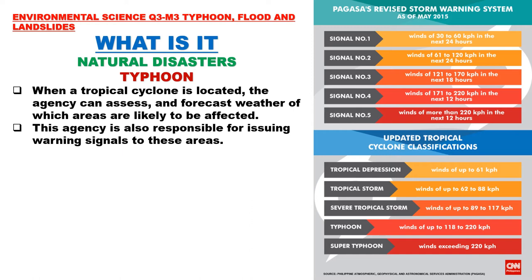Once a tropical cyclone enters the Philippine Area of Responsibility, PAGASA issues weather forecasts and mentions the areas in the Philippines likely to be affected. PAGASA is also responsible for issuing warning signals to these areas. Here is PAGASA's revised storm warning system as of May 2015.